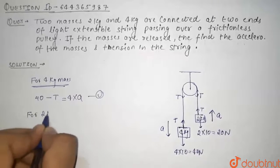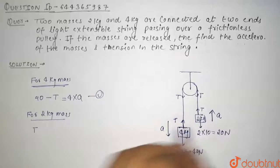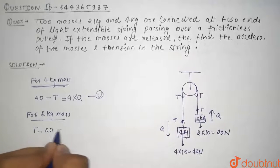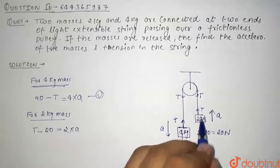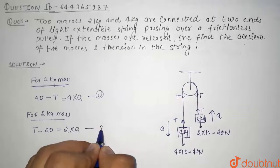Now for 2 kg mass we can write it as tension minus 20 is equal to 2 into a, because tension is upward and acceleration of this block is also upward. This is our second equation.